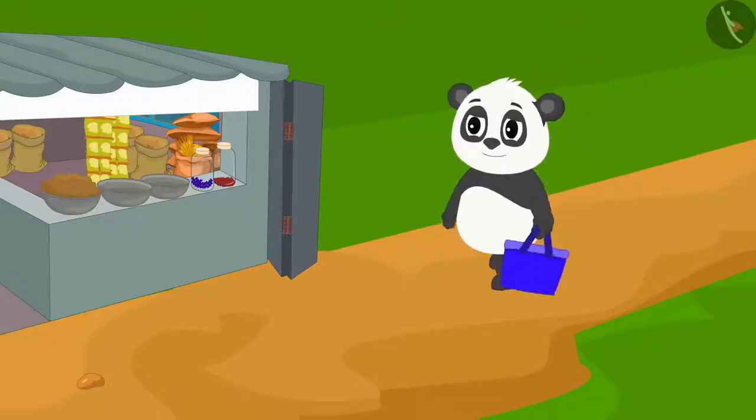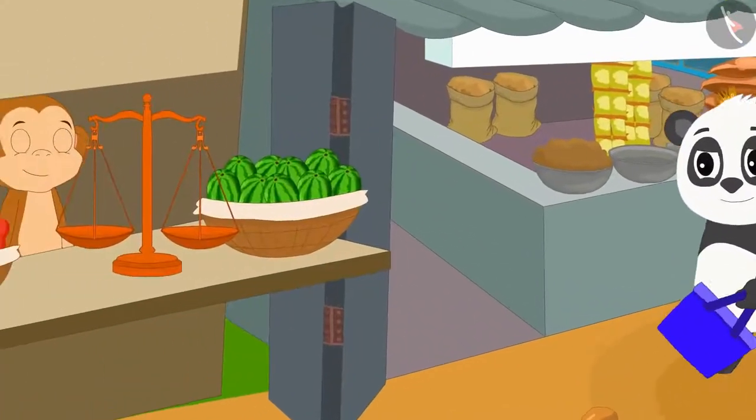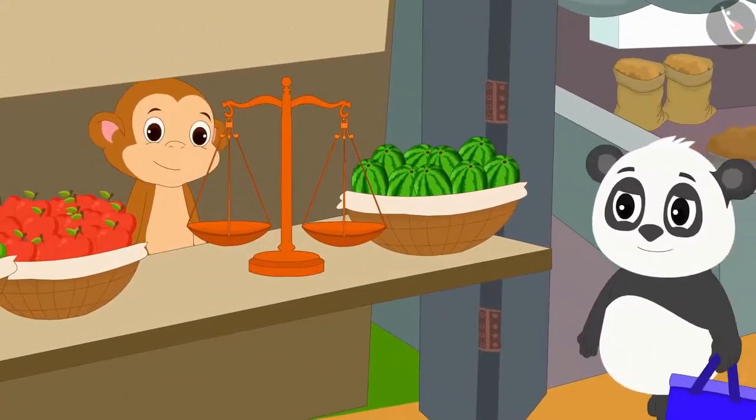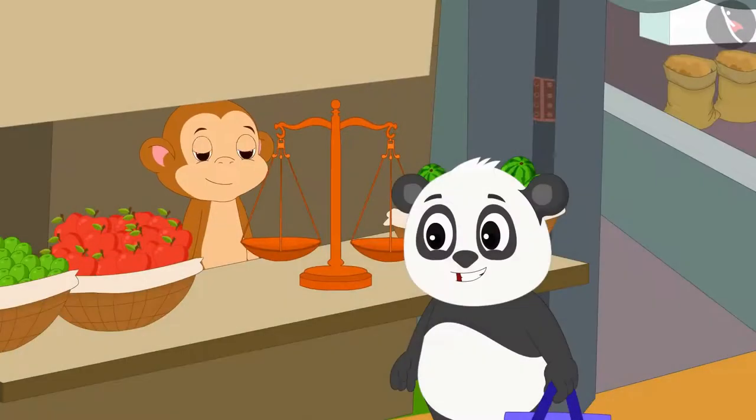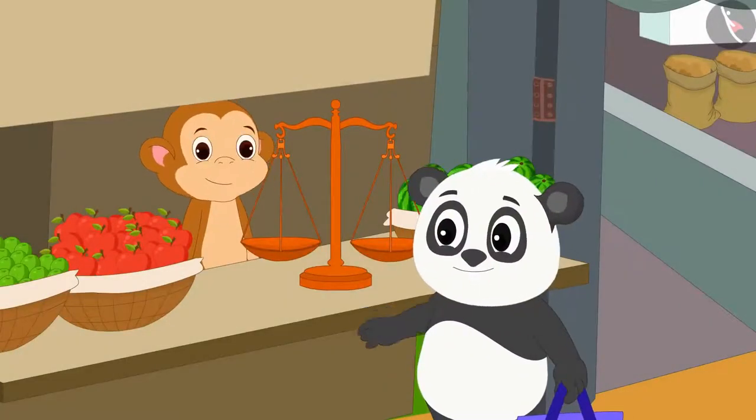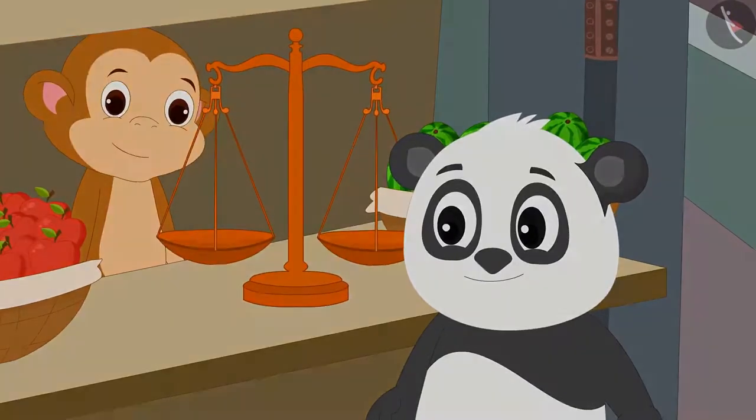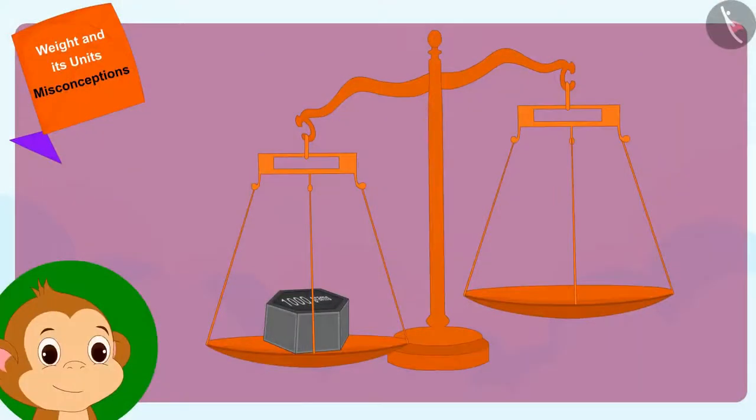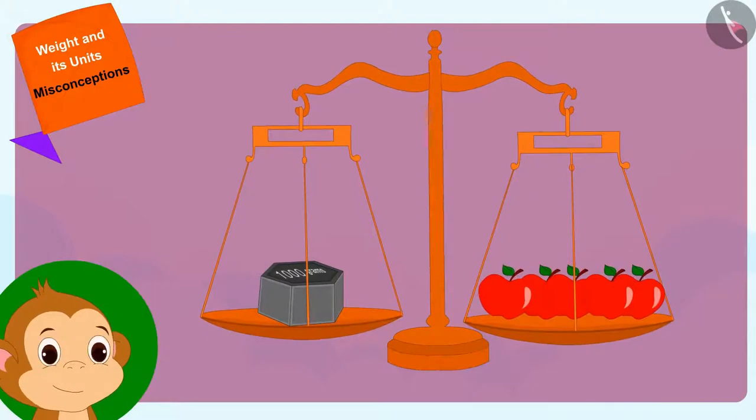Golu has come to the market to buy apples. First, he went to Babban's fruit stall. Babban, give me apples for 50 rupees please, Golu said to Babban. Babban placed some apples on his weighing scale like this.